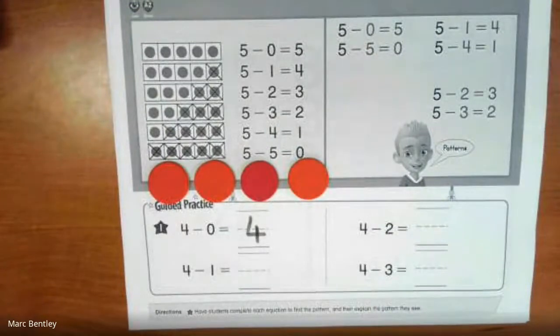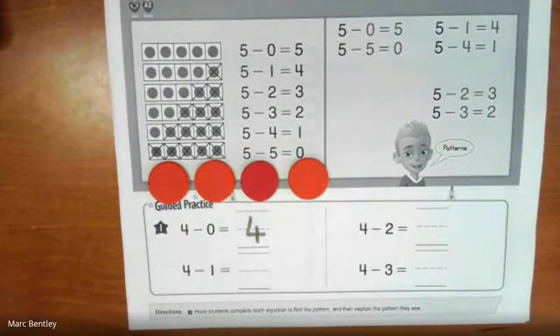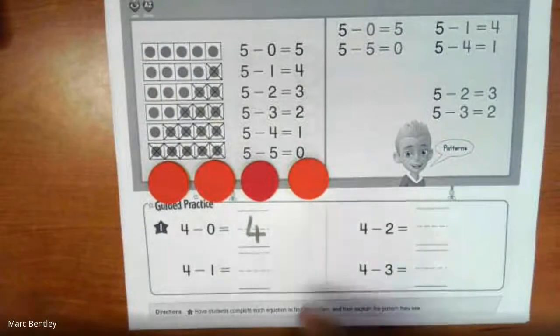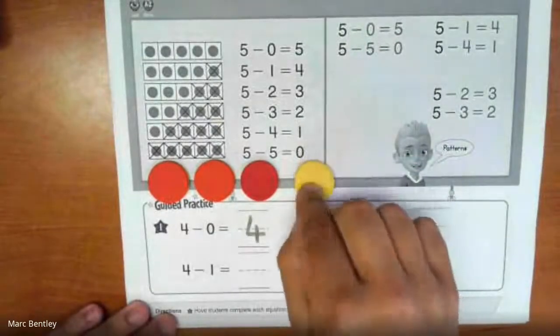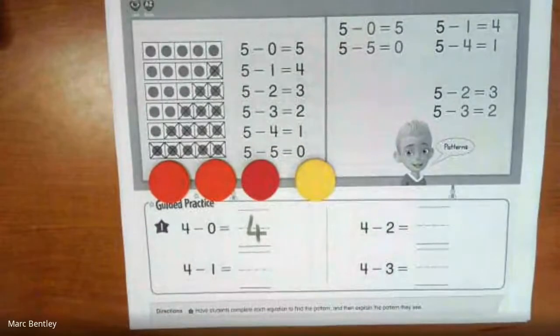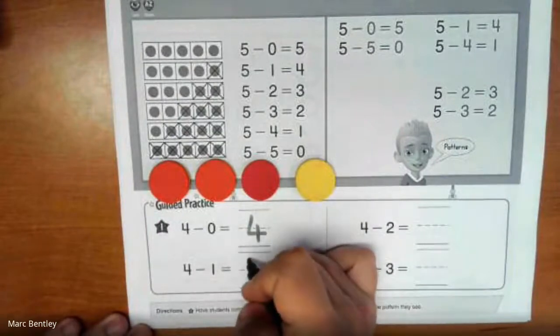Okay, so today we're just going to be concentrating on the red counters. So what I'm going to do to represent the subtraction is flip each of these counters. So moving down, 4 minus 1. So if I flip this end counter, how many red counters am I left with? If you said 3, you're right. 4 minus 1 equals 3.